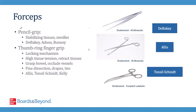In surgery it's actually pretty difficult to hold onto tissues using just your hands and fingers, so we rely on instruments known as forceps to help us pick tissues up. Some forceps are best held like you would a pencil, and this is ergonomic for stabilizing tissues and needles — an example is the DeBakey forcep you can see on the right. The other type is the thumb ring finger grip forcep, held just like a pair of surgical scissors. These forceps tend to have locking mechanisms with different amounts of tissue tension, so you can clamp down to move tissues out of the way, or be more delicate when grasping bowel and occluding blood vessels. They can also be used for fine dissection and securing drapes and sutures. An example of a thumb ring finger forcep is the Alice or the Tonsil Schnit.